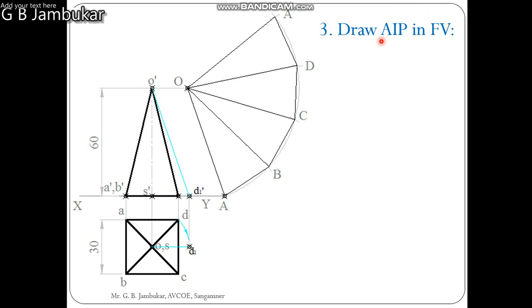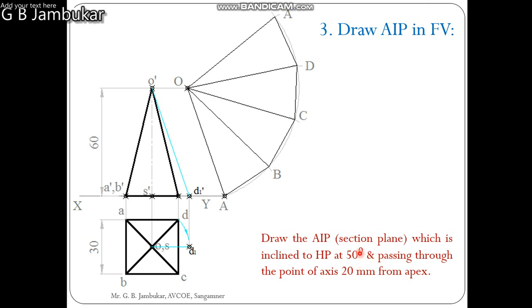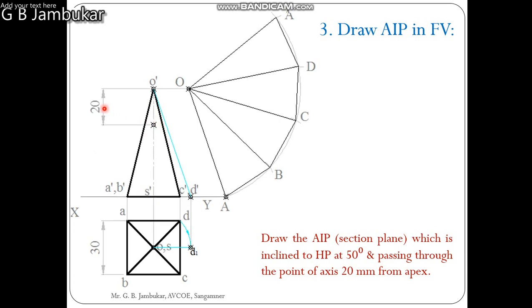Drawing of auxiliary inclined plane. In the statement, it is given that the auxiliary inclined plane is inclined to HP at 50 degrees and passing through the point 20 mm from the apex. Locate point 20 mm below O on the axis. The distance is 20 mm. Through this point, draw a line at 50 degrees as mentioned in the problem statement.